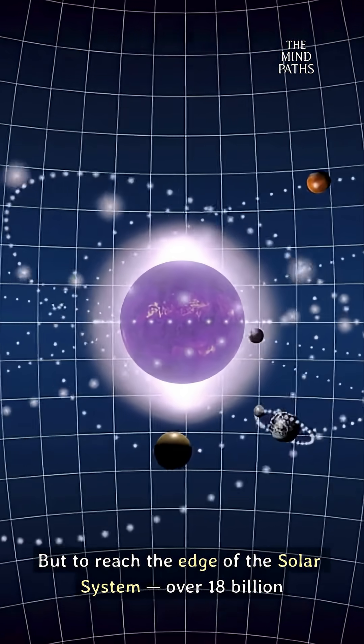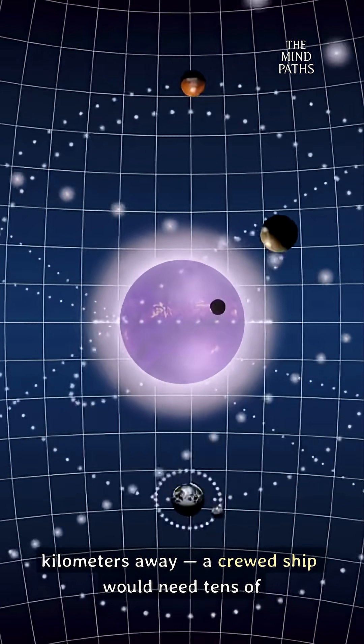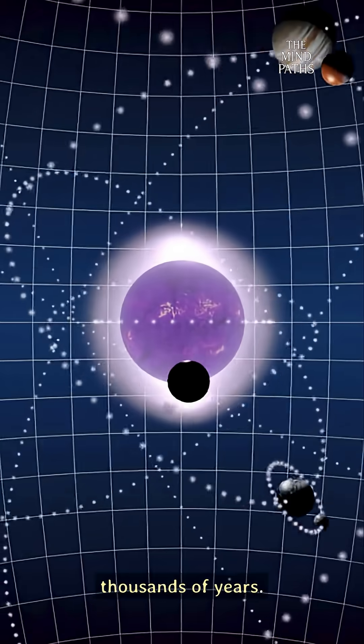But to reach the edge of the solar system, over 18 billion kilometers away, a crewed ship would need tens of thousands of years.